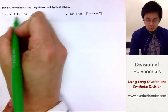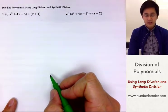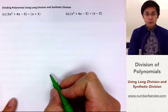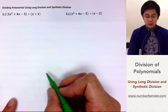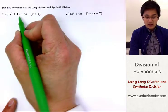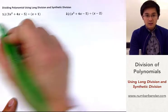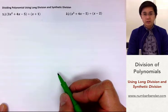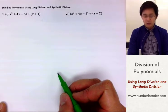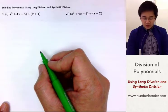So, I have 3x squared plus 4x minus 5. The first thing that you need to check is whether your polynomial is in standard form with no gaps in between. So, if I have x squared, I have x to the first power and a constant — this is a complete set of my polynomial, so I don't need to worry about gaps. You will encounter that in the second example later on.